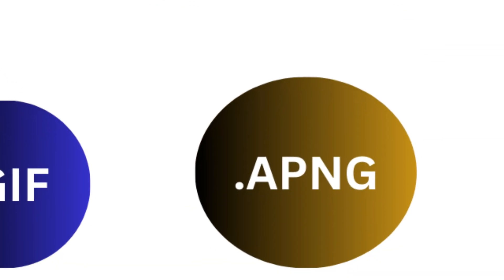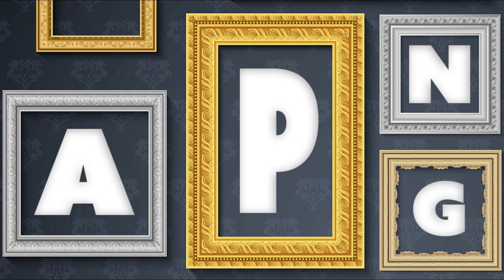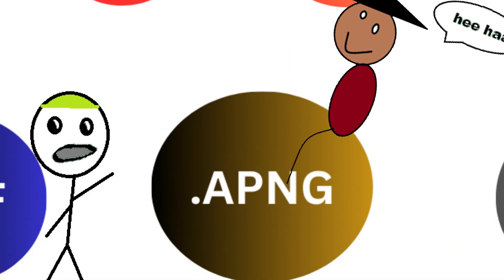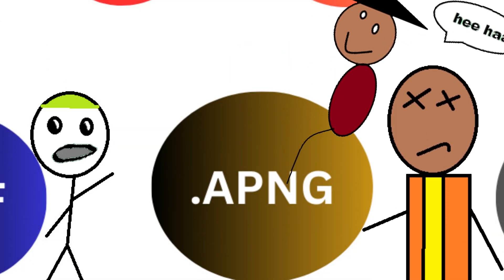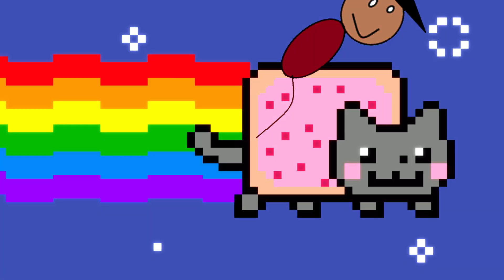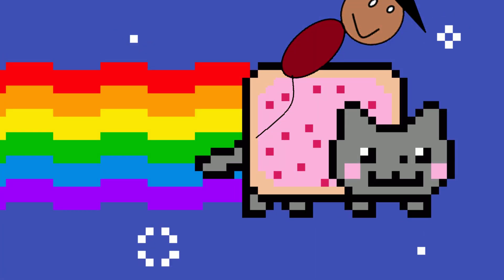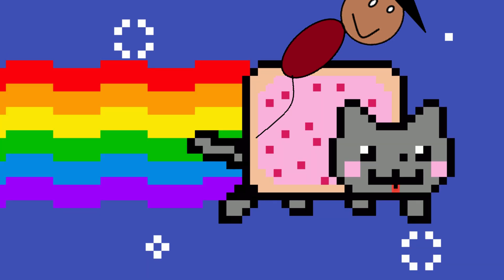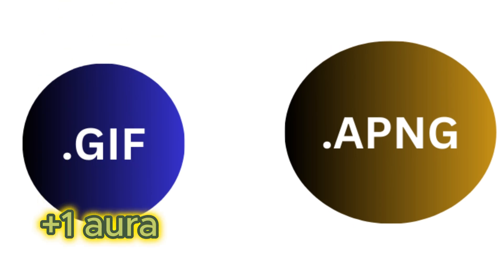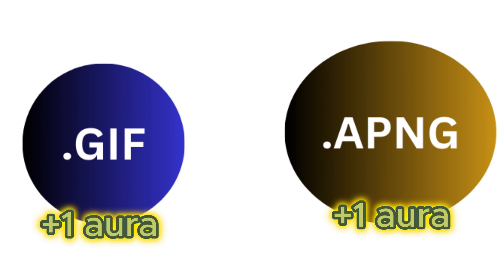Next on the list is APNG, also known as Animated Portable Network Graphics. APNG is an extension of the PNG format, introduced in 2004 by Stuart Parmenter and Vladimir Vukicevich. It was designed to support animations while maintaining the same lossless quality as PNG. APNG is good for short animations, such as stickers or looping effects, while keeping high quality and transparency. However, it may not be as widely supported as GIF, which is better if you need broader compatibility, but GIF has lower quality and limited colors compared to APNG.